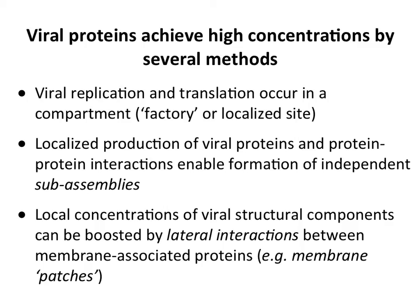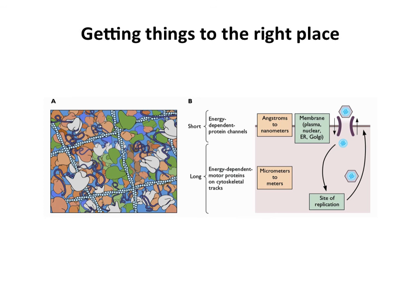Sometimes you have localized production of proteins: a single protein is made, then protein-protein interactions attract more proteins and that makes a factory. You can also make subassemblies of individual proteins which then join to form the virion. The membrane also plays a role — structural components often line up right under a membrane. This leads to so-called membrane patches; just before a bud forms you can see right beneath the membrane a patch where viral proteins are being accumulated.